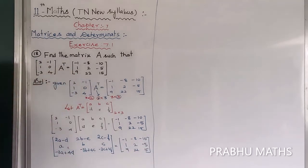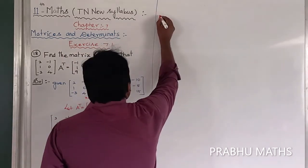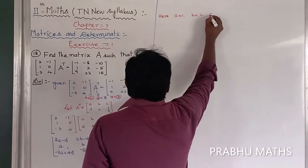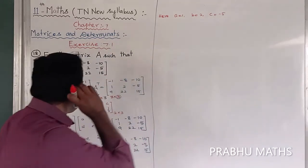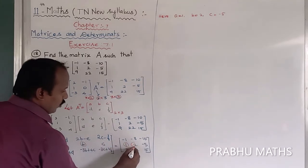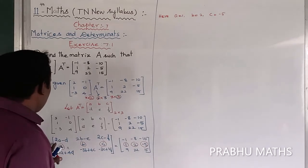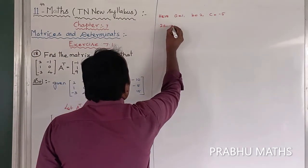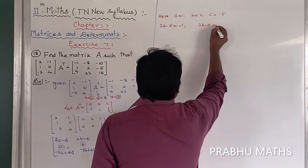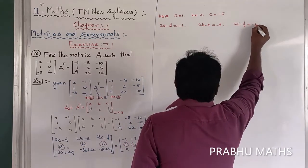Equating the corresponding entries: From the second row, A equals 1, B equals 2, C equals -5. From the first row: 2A minus D equals -1, 2B minus E equals -8, and 2C minus F equals -10.